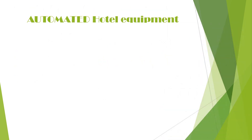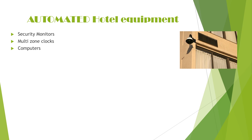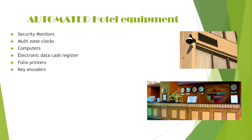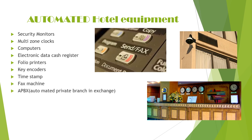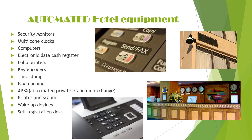Automated hotel equipment is fully automated and controlled or mechanized by computer. This includes security monitors, multi-zone clocks — for example, clocks showing different time zones from various countries — electronic data cash registers, folio printers, key encoders, fax machine, APBX (Automated Private Branch Exchange), printer and scanner, wake-up devices used by the front office for giving wake-up calls, and self-registration desks.